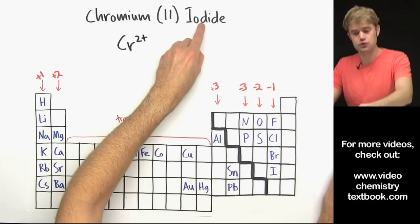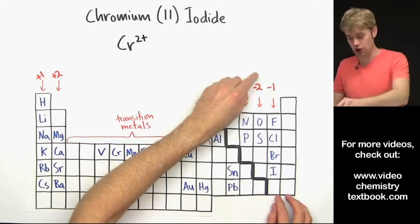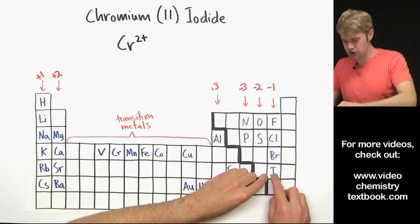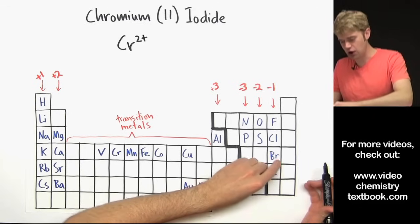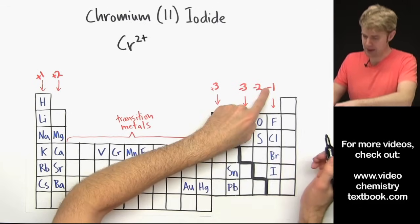Now we have iodide which is what we call iodine when it has a charge. And iodine is in this column right here which means that in an ionic compound its charge is always minus 1.